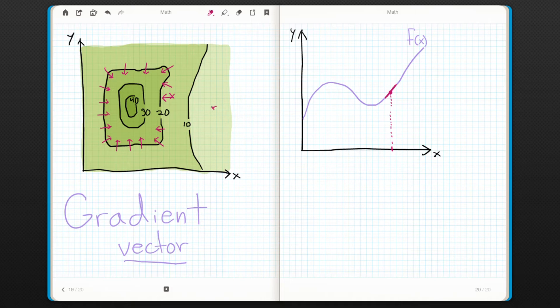So over here, where the function is increasing very slowly, the vectors will be small. Here where the hill is steeper, the vectors are longer.